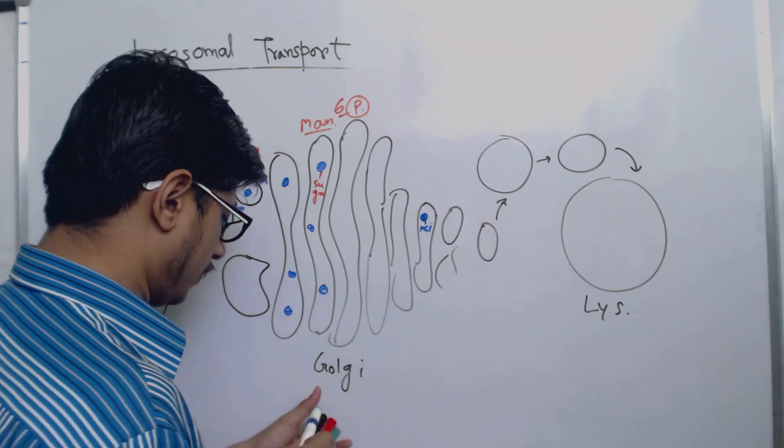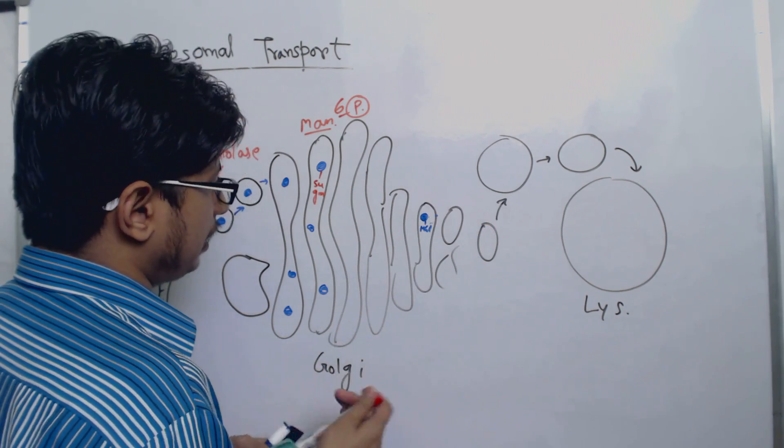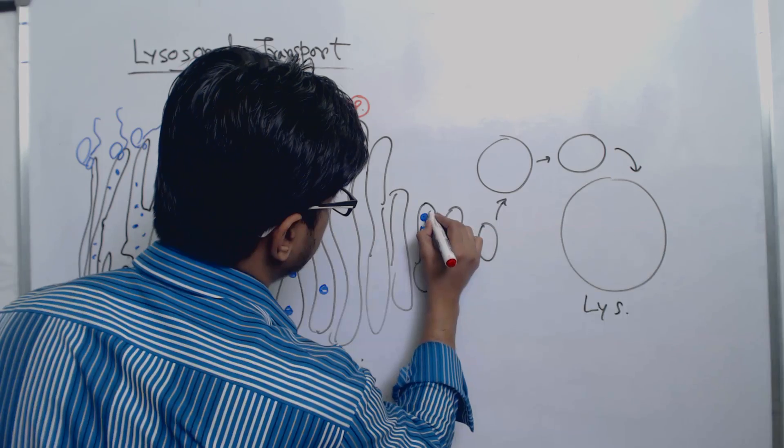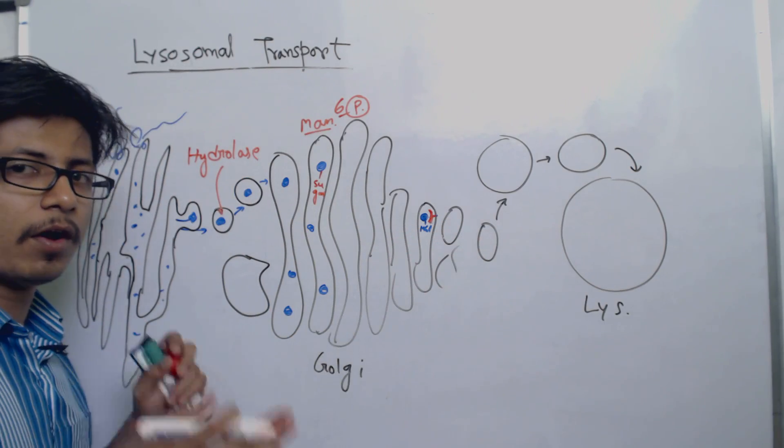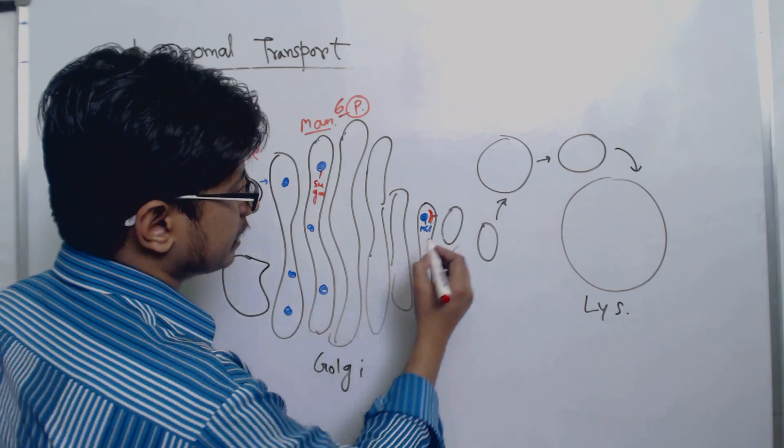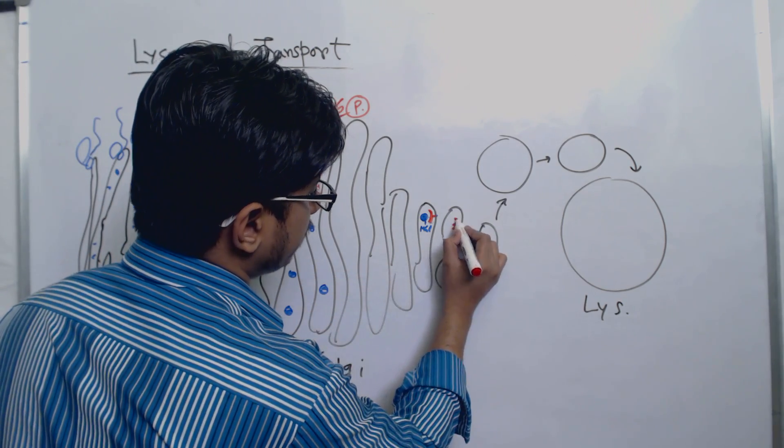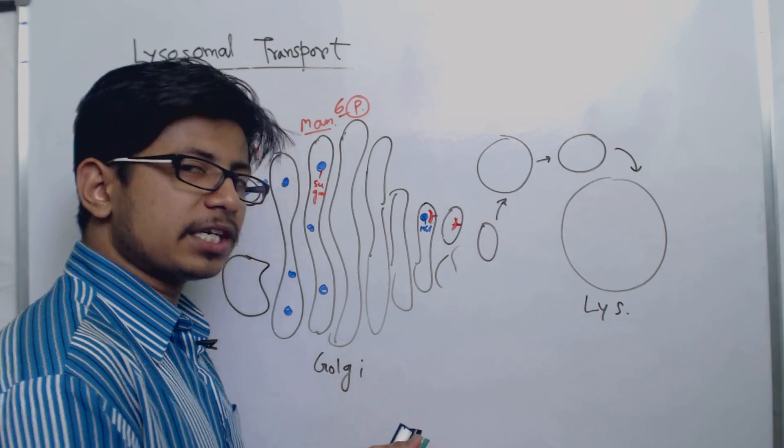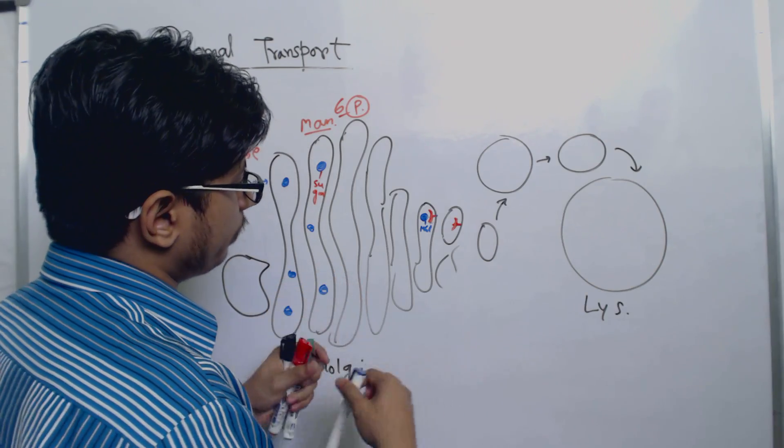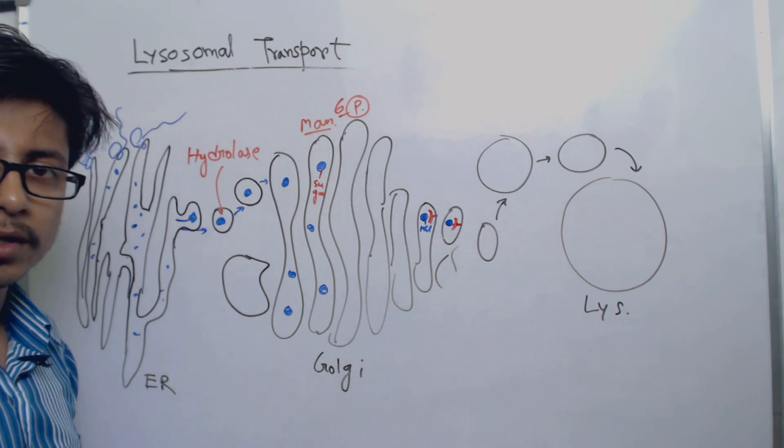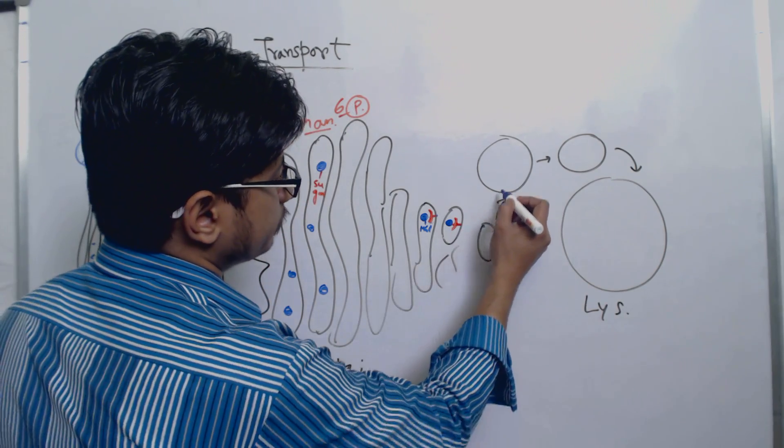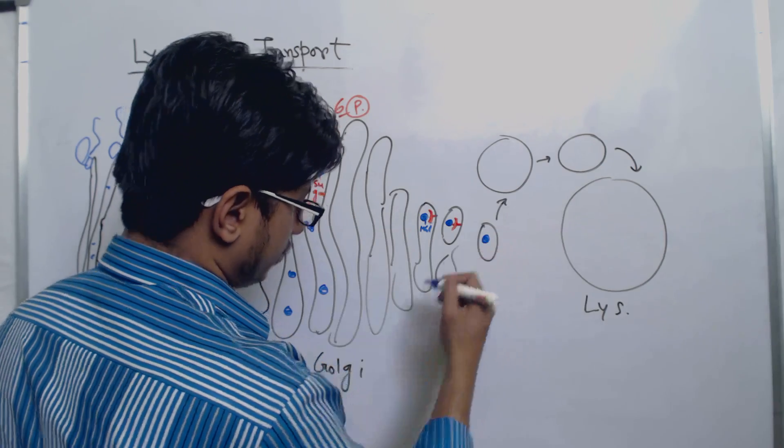Let's draw the mannose 6-phosphate receptor with a different color, with the red color. So this is the mannose 6-phosphate receptor which binds to the mannose 6-phosphate of the hydrolase enzyme. And once this is done, it will start creating vesicles and start pinching out from the Golgi network. And then it is transported throughout the structures.